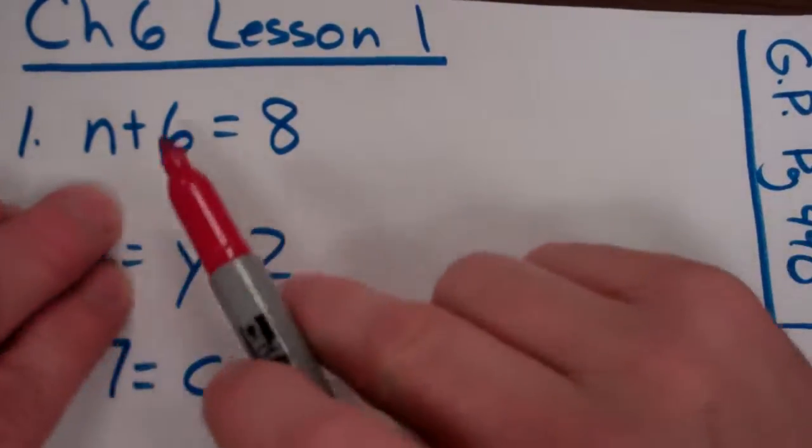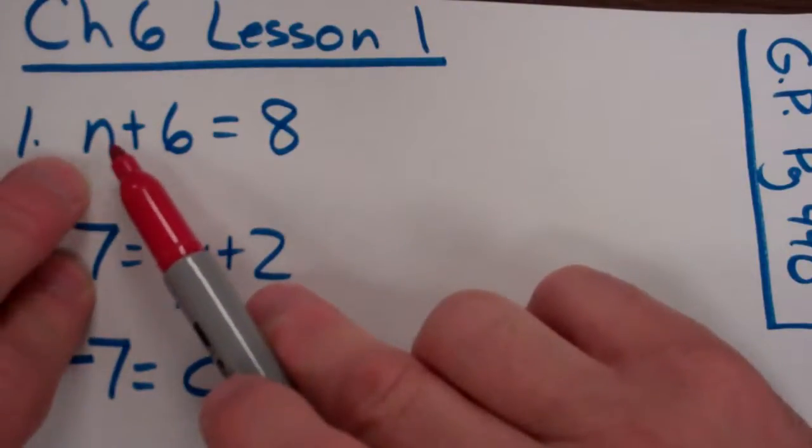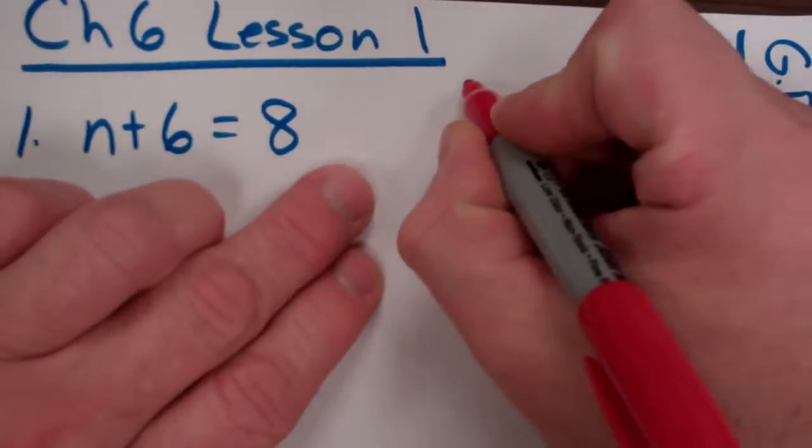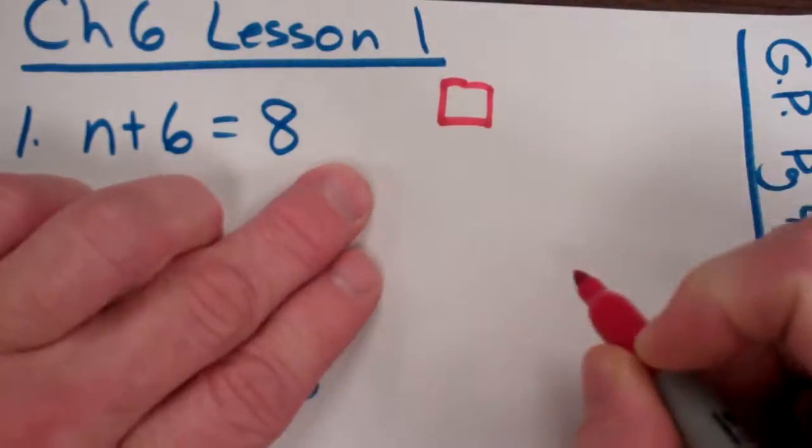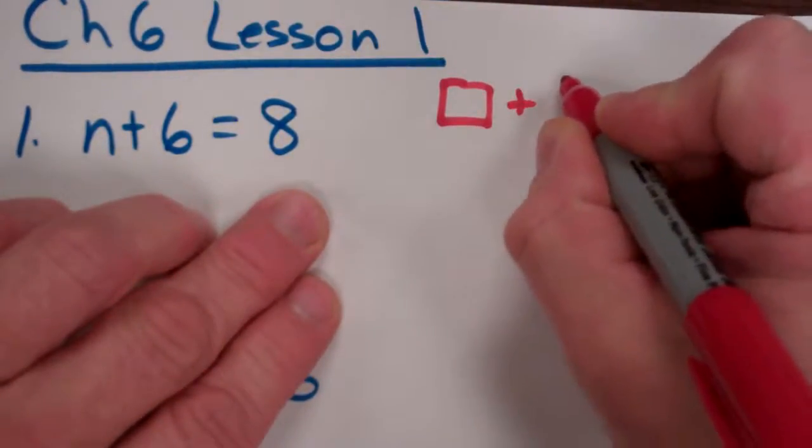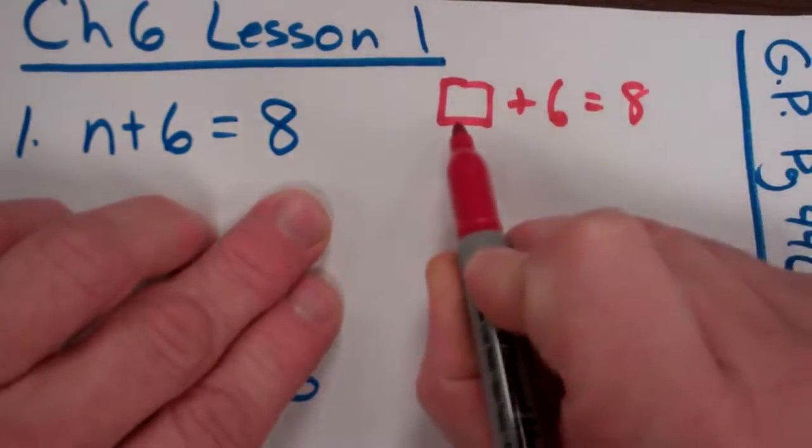N plus 6 equals 8. I know you guys know the answer to this. The answer is obviously 2. 2 plus 6 equals 8. They started out in grade school with this box. Box plus 6 equals 8, and we want to find out what's in the box.